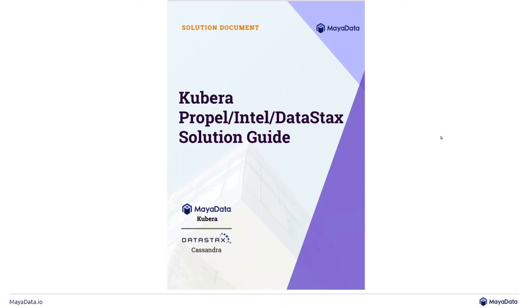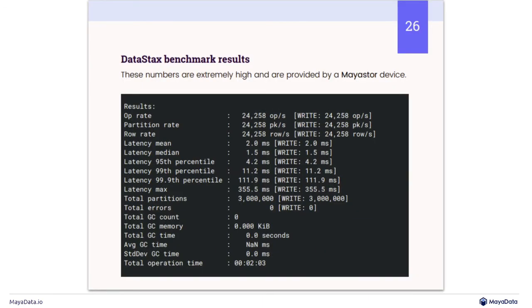That demo is a toy cluster on AWS, so you're not going to see the most impressive numbers out of the box. But we actually did partner with Intel and DataStax. Intel provided Optane hardware, which is some of the best tech out there in the NVMe space. DataStax is of course known for their work with Cassandra, one of the most popular distributed databases out there. Combining all this together — Kubera Propel or MayaStore as our implementation of SPDK/DPDK technology — along with Intel and DataStax, we saw some amazing results. We saw some really impressive numbers with the Cassandra benchmark, showing around 3 million writes.